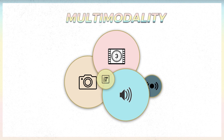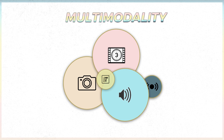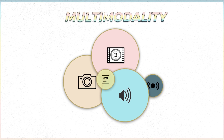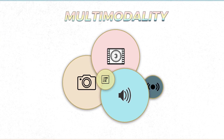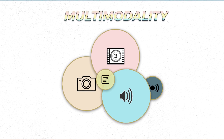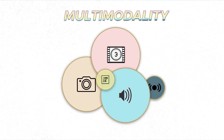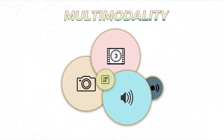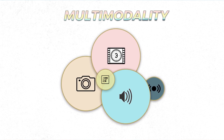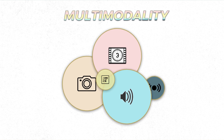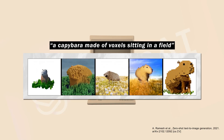Multimodal models, however, are trained on multiple kinds of data at once. They could be trained on images and text, text and video, or even audio and other kinds of sensory data. From looking at the world through multiple mediums or modalities, these models develop a holistic, better understanding of the real world.